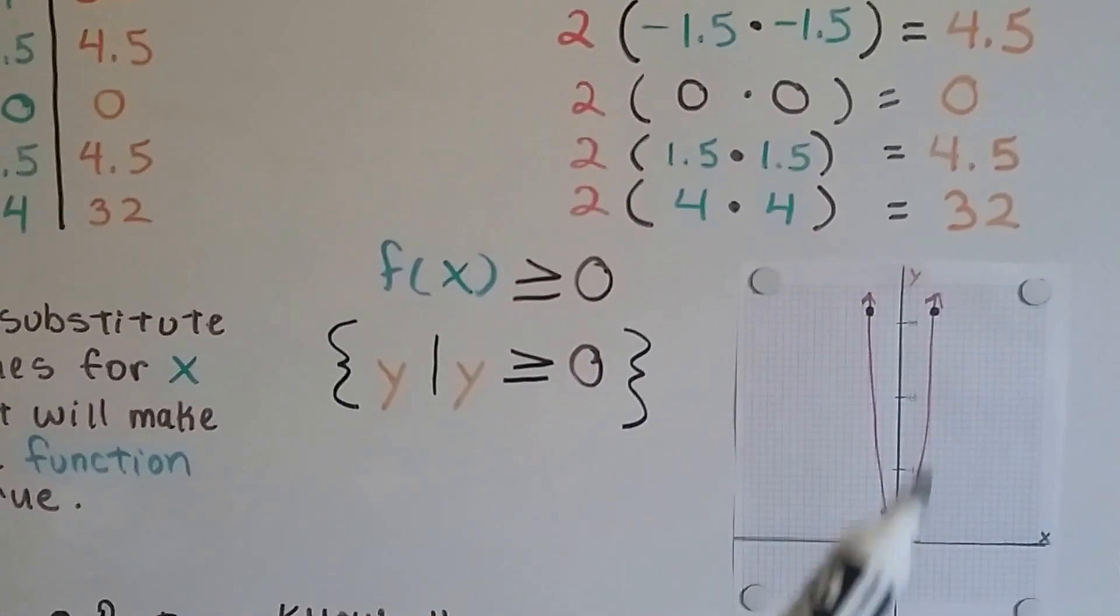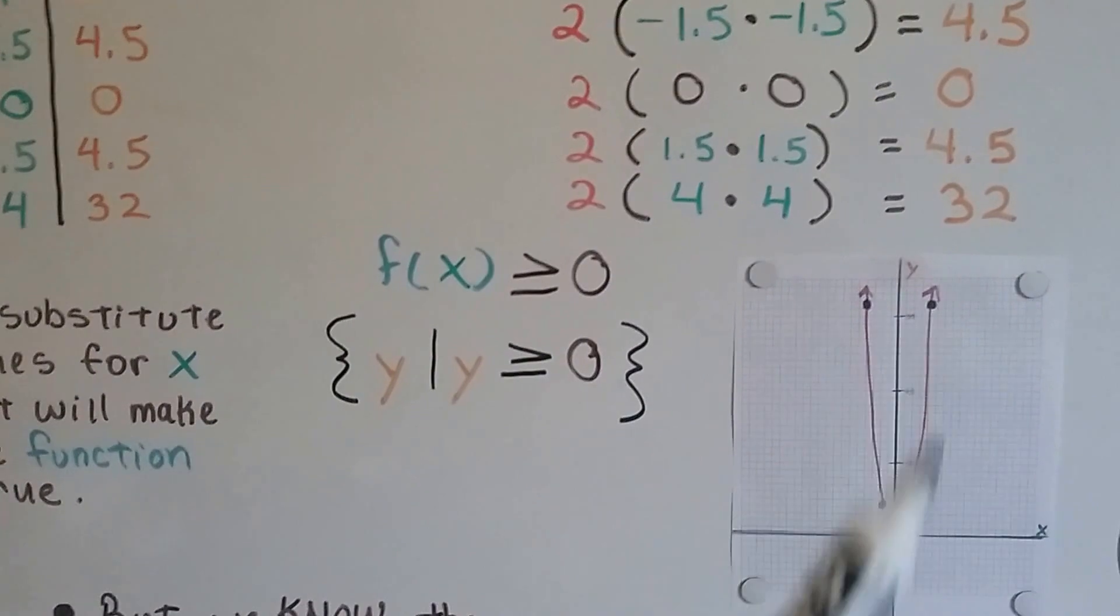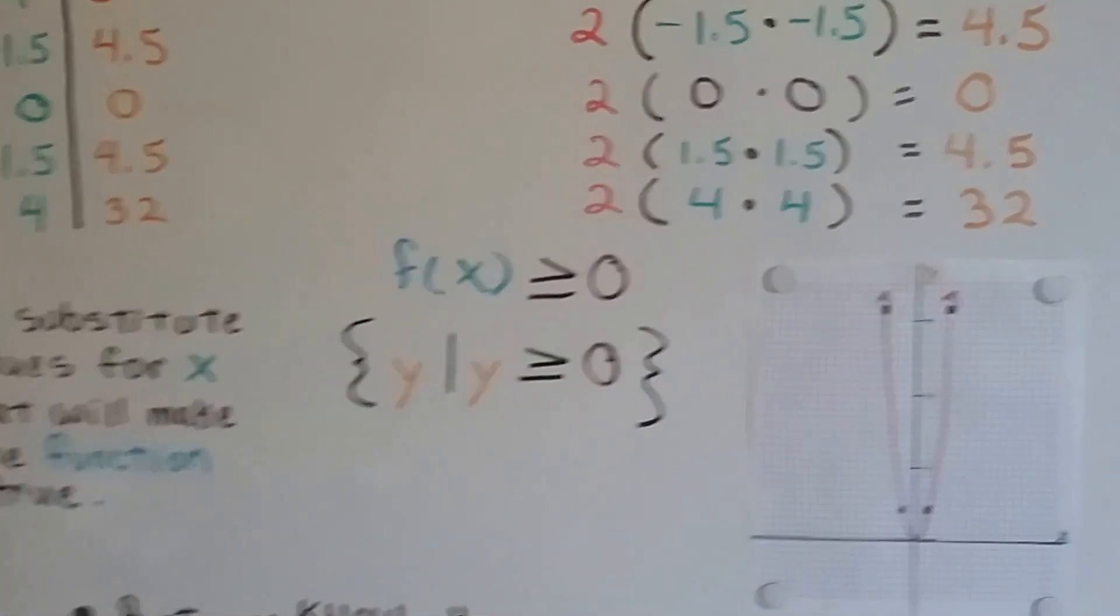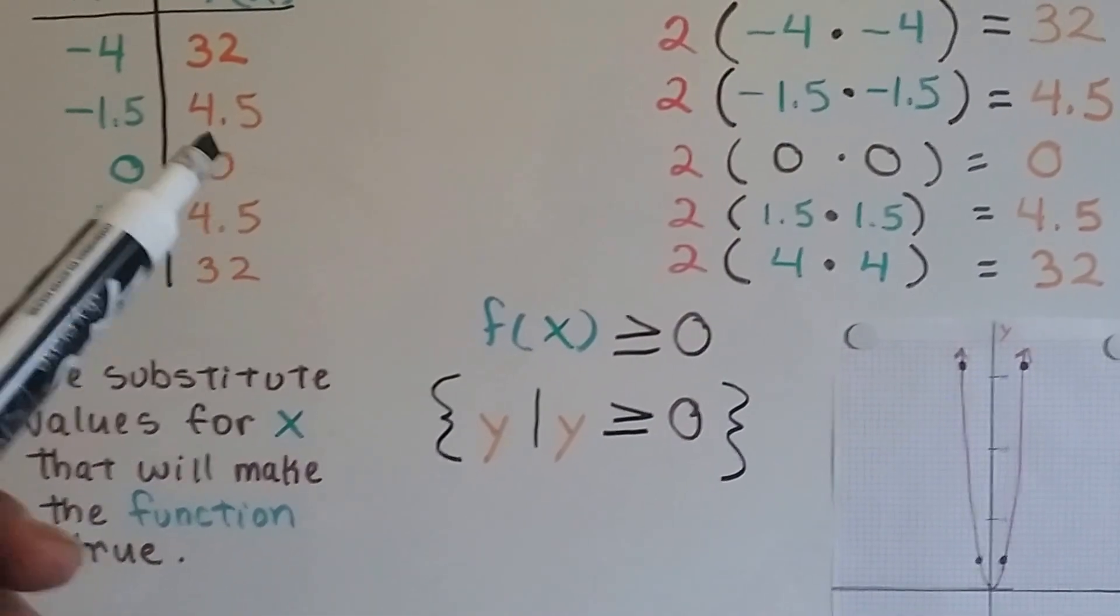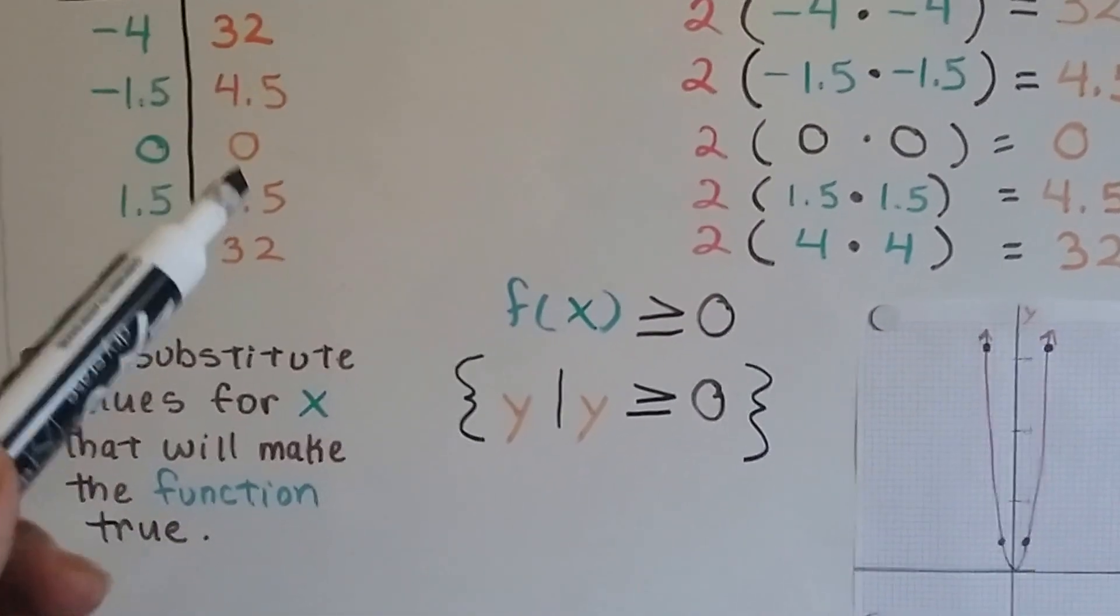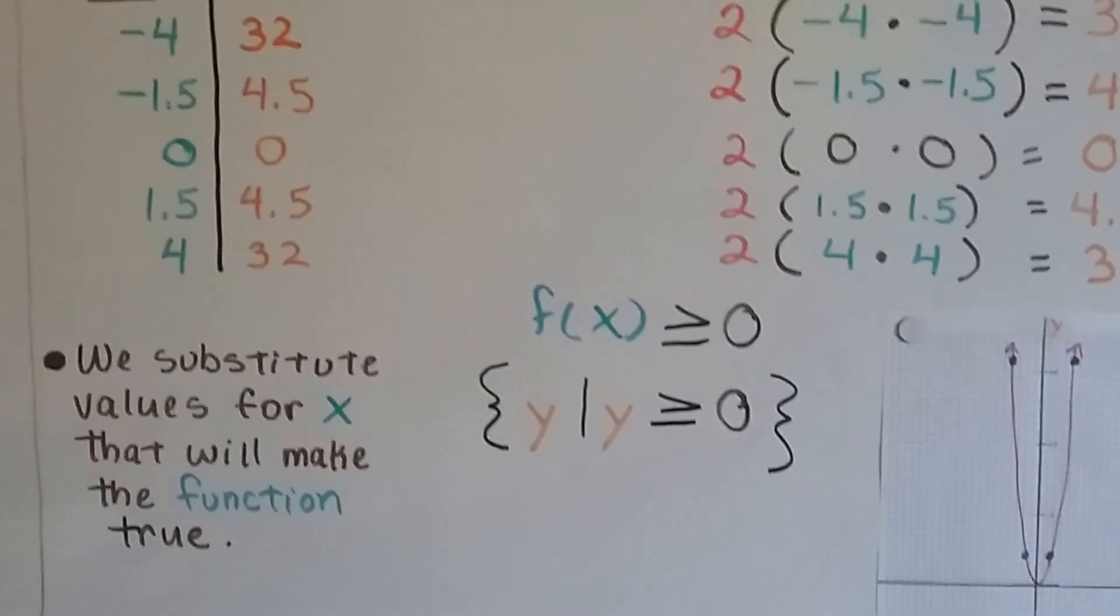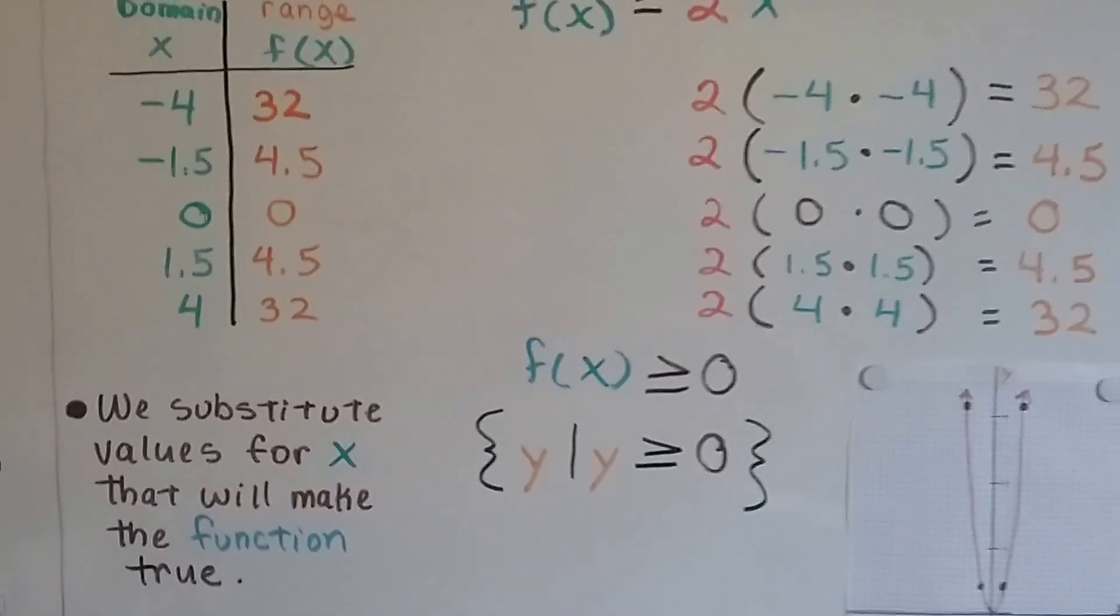We can graph it and it makes this very steep slope, doesn't it? Look at the slope of that line, how steep it is. So, the function of x is greater than or equal to 0. See? We substitute values for x that will make this function true.